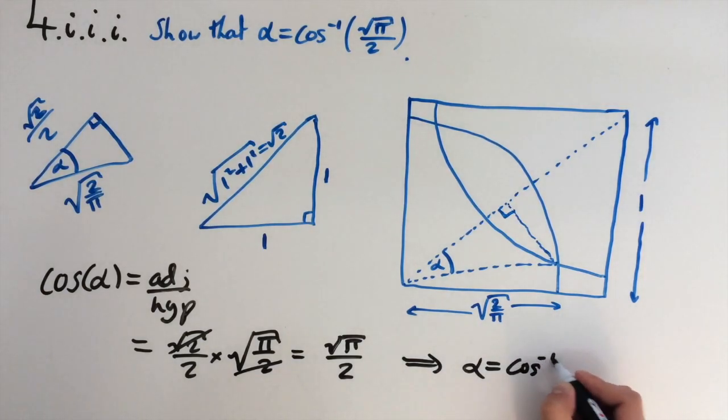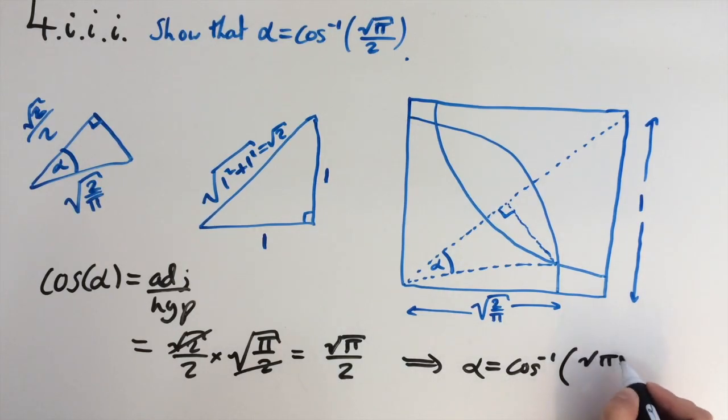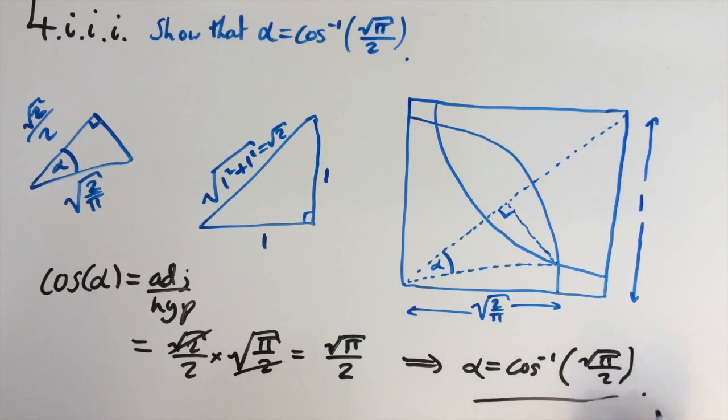Therefore alpha equals cosine to the power of minus 1 of the square root of pi over 2, which is what we're after.